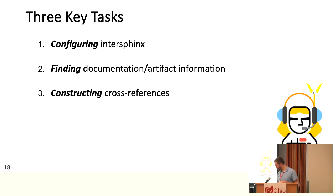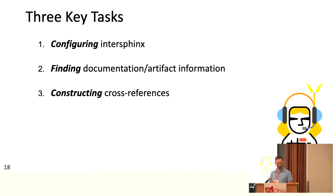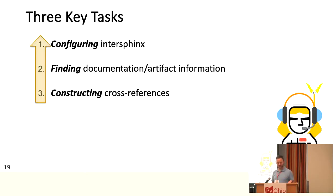In the remainder of the talk, I'm going to go through what I see as the three key tasks to getting these cross-references in place in really an easy way, once you know what you're looking for. You have to get InterSphinx installed and configured, find the documentation about the artifact you're trying to cross-reference, and write the cross-reference. For the purposes of exposition, it's actually clearest to discuss these in reverse order — so that's what I'm going to do.